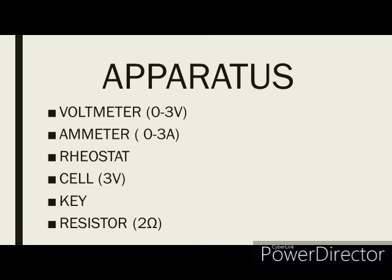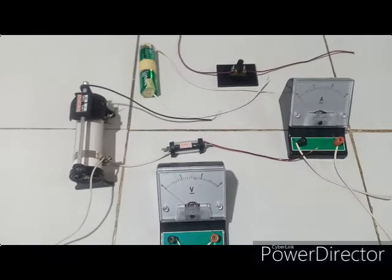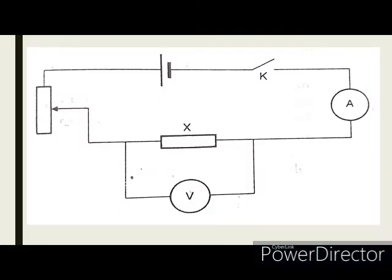To achieve that we'll be using a rheostat, a 0-3 volt meter, a 0-3 ammeter, a 3 volt battery, a 2 ohm resistor and a key.